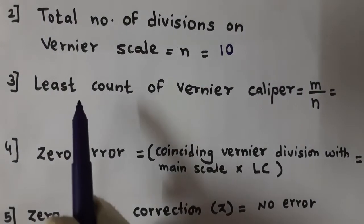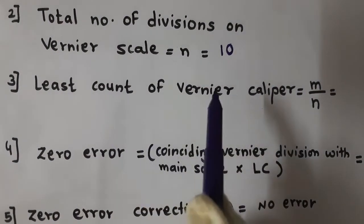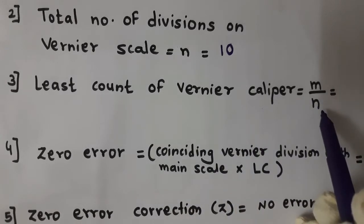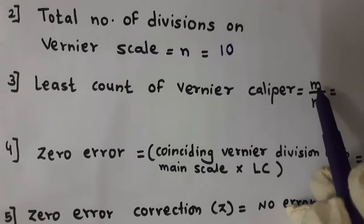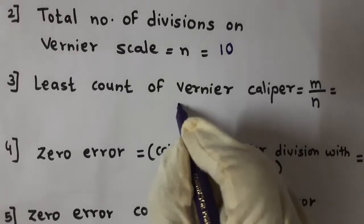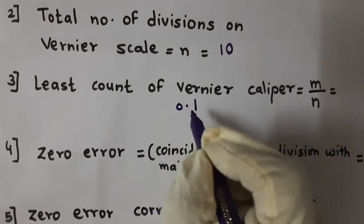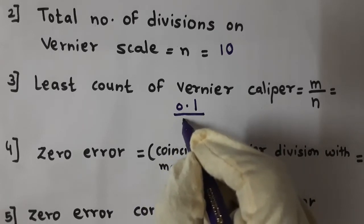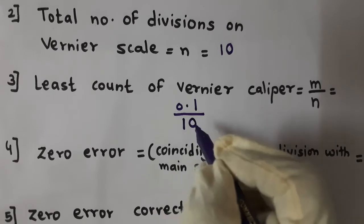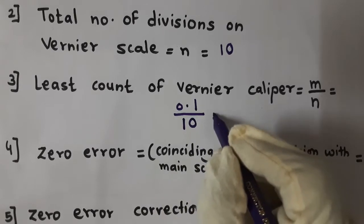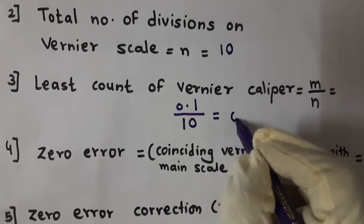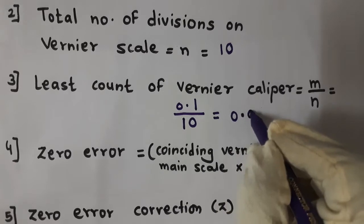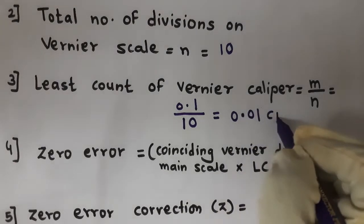The least count of the Vernier Caliper is equal to m divided by n. We know the value of m is 0.1 centimeter, divided by n which is the number of divisions on the Vernier scale, that is 10. So the least count of the Vernier Caliper is 0.01 centimeter.